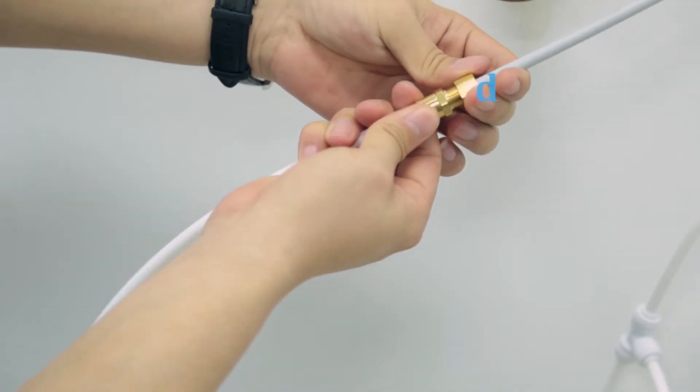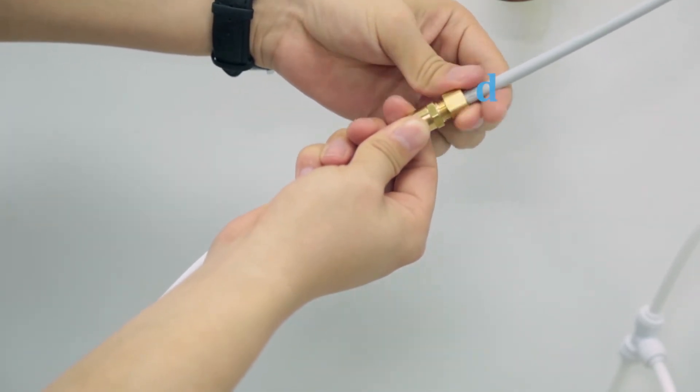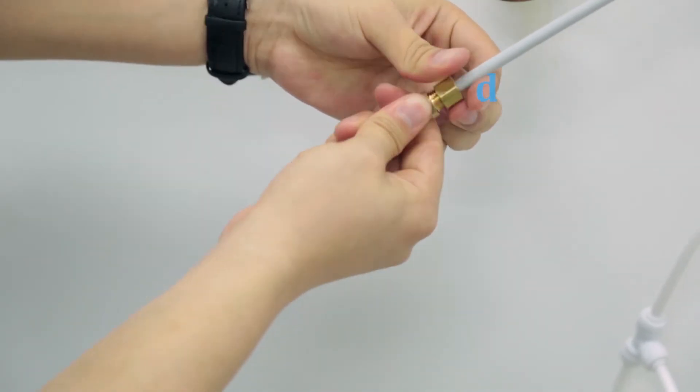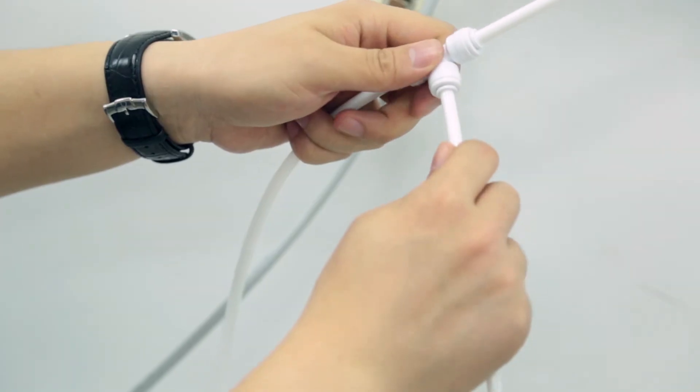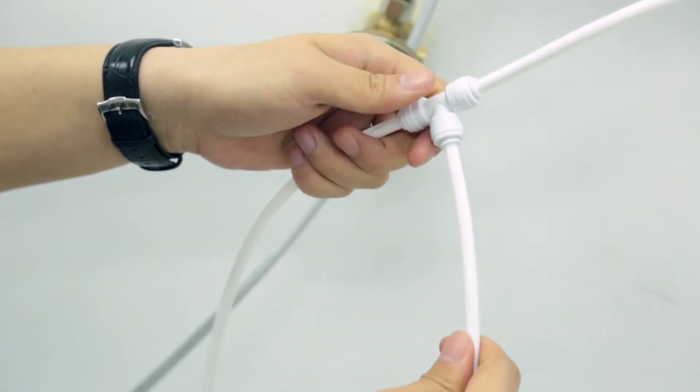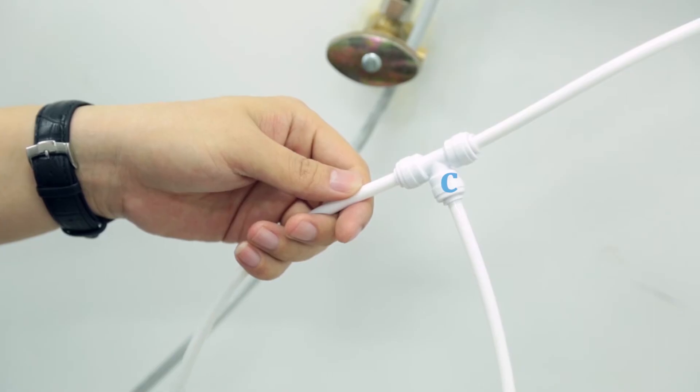Screw straight fitting D on the refrigerator water tubing. According to the position of T fitting and straight fitting, cut out PE tube of proper length to connect the two fittings C and E.